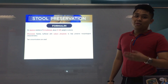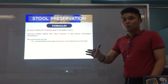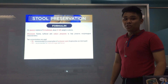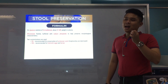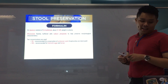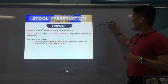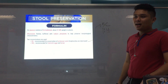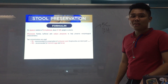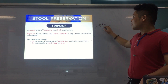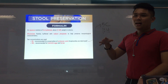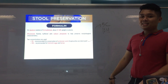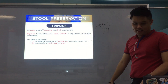Two concentrations for parasitology are used. The first one is 5%, and it's usually used if we want to preserve protozoan cysts, because trophozoites are destroyed by formalin. And 10% for helminth eggs and larvae. A mnemonic: 5C — 5% for cysts — and 10H — 10% for helminth eggs and larvae.